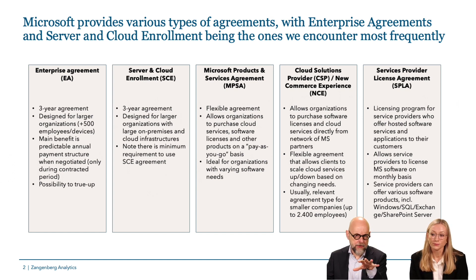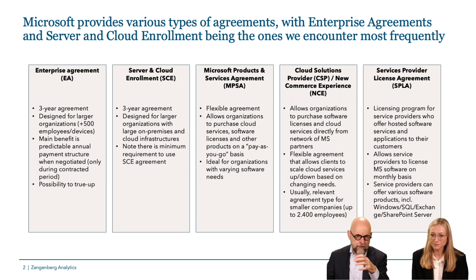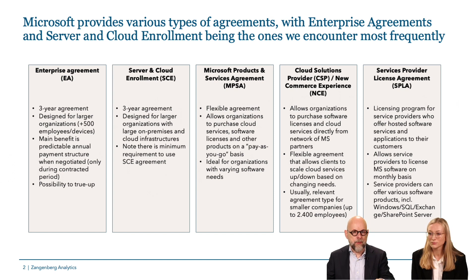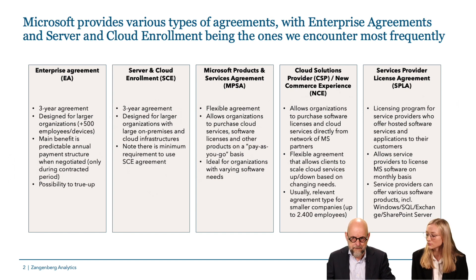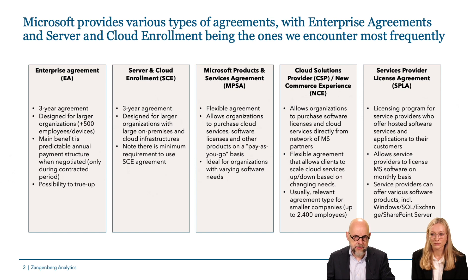The lack of flexibility in EA and SCE comes from committing to a minimum volume of licenses, but in exchange for that commitment you can get better prices — which is very typical for software products. The more you commit, the better the discount you usually get, which explains the better prices in those two compared to MPSA and CSP.